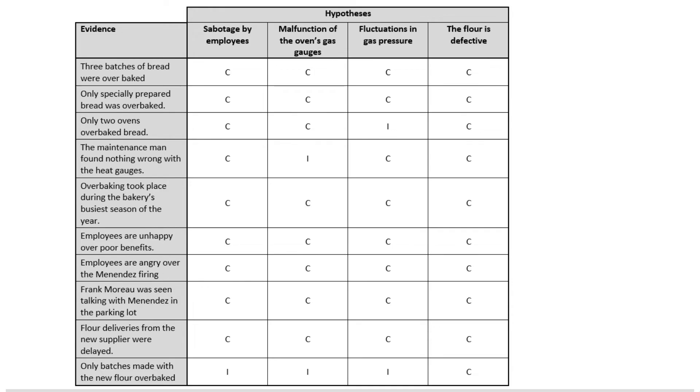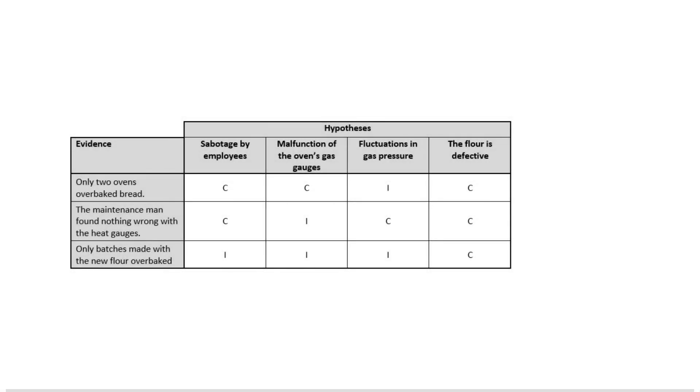But when we go to actually simplify things down, most of the evidence that we have is actually not useful because most of the evidence that we have is consistent with all of those hypotheses and doesn't really tell us anything. In fact when we're trying to come to a conclusion about which of these hypotheses is most likely, there's really only three pieces of evidence that are relevant.